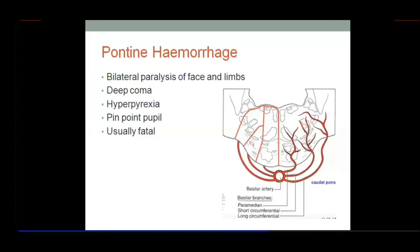You have already been taught all about the pons — internal structures, external structures, nuclei, gray and white matter. Remember that throughout the medulla, pons, and midbrain, the reticular formation is very common, with meshwork fibers and scattered nuclei forming reticulospinal tracts. We are talking about perfusion of the pons, and in case of hemorrhage, that is called pontine hemorrhage.